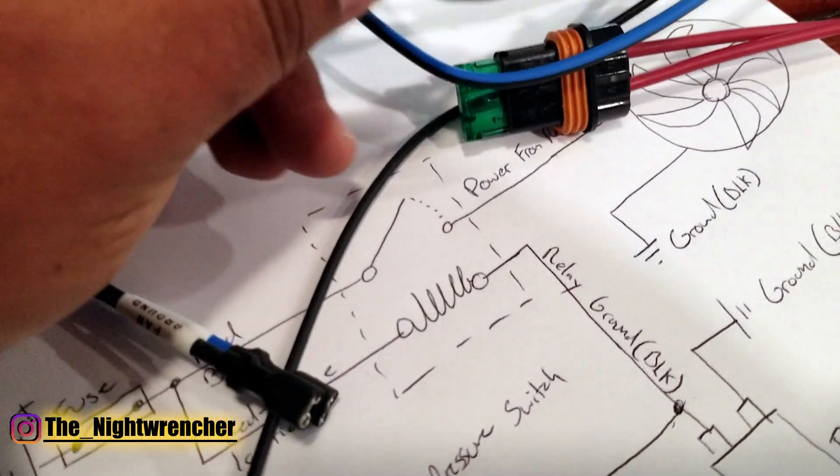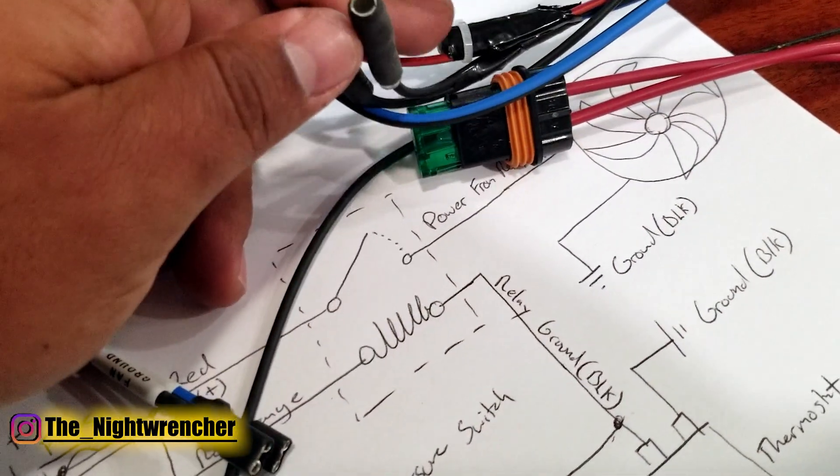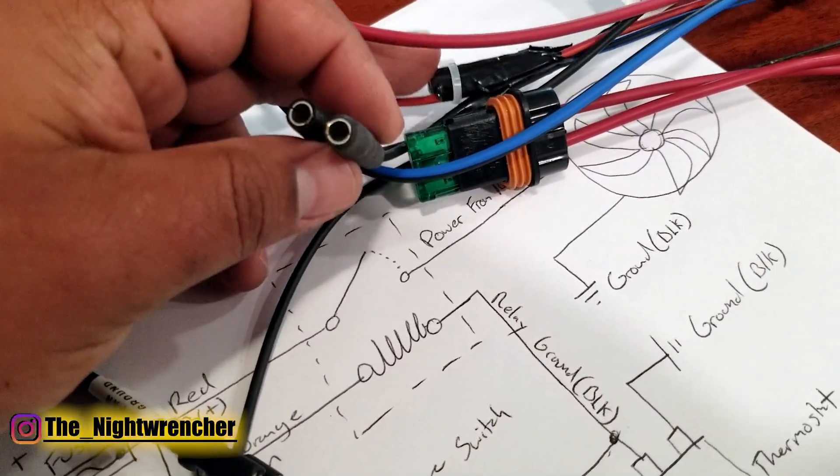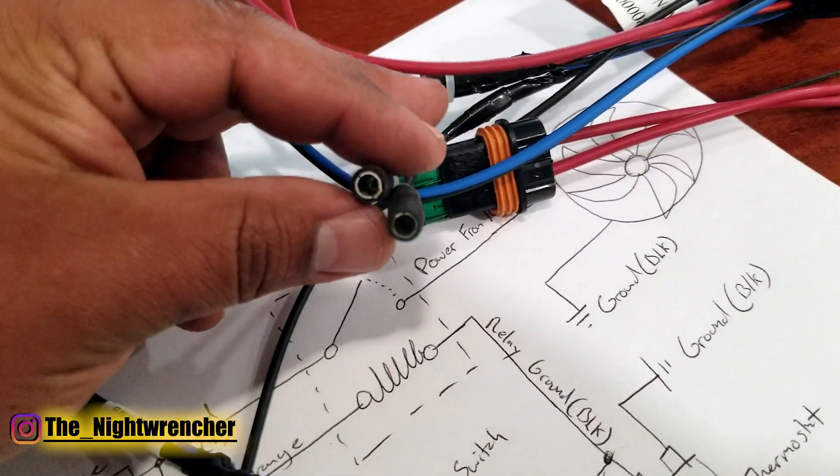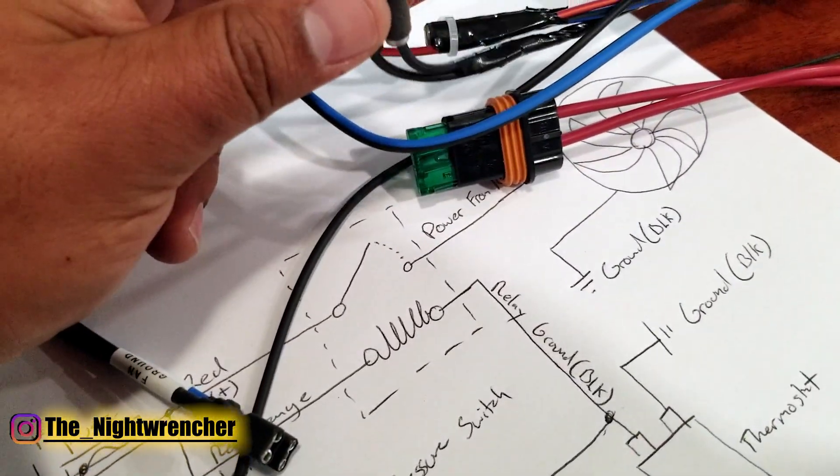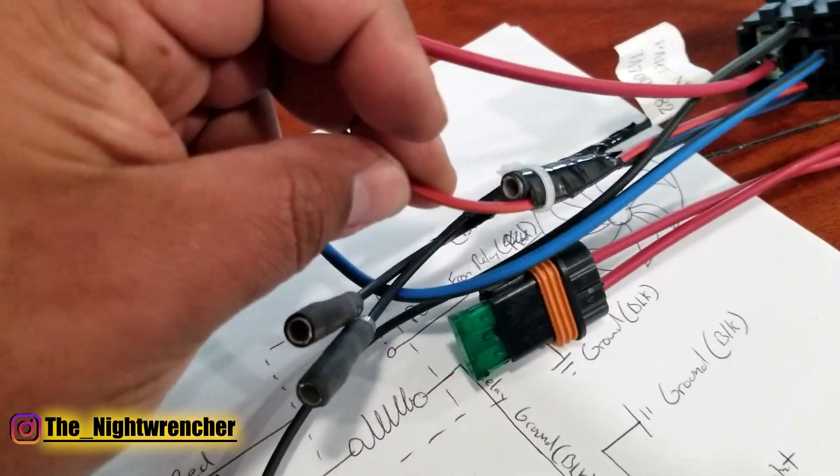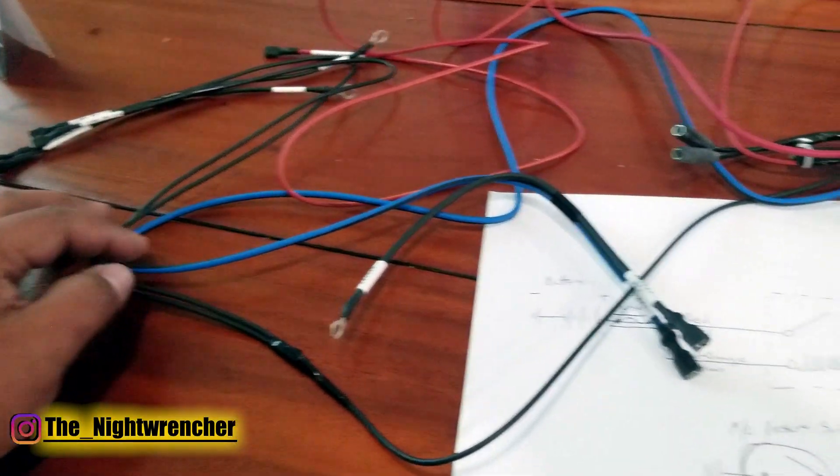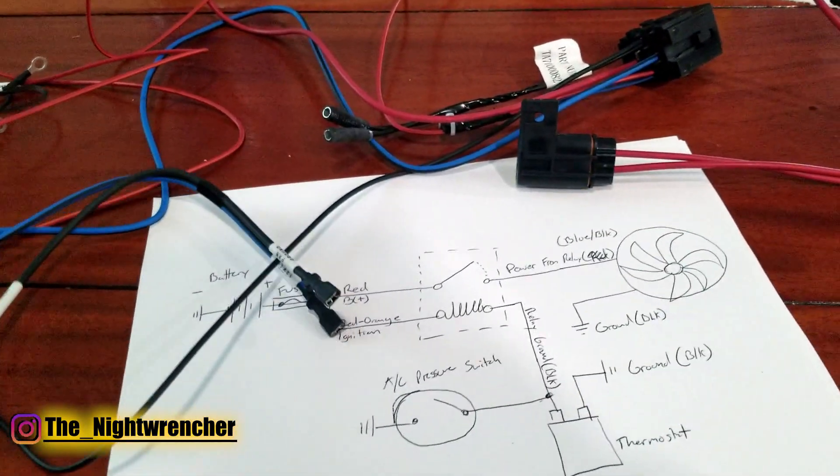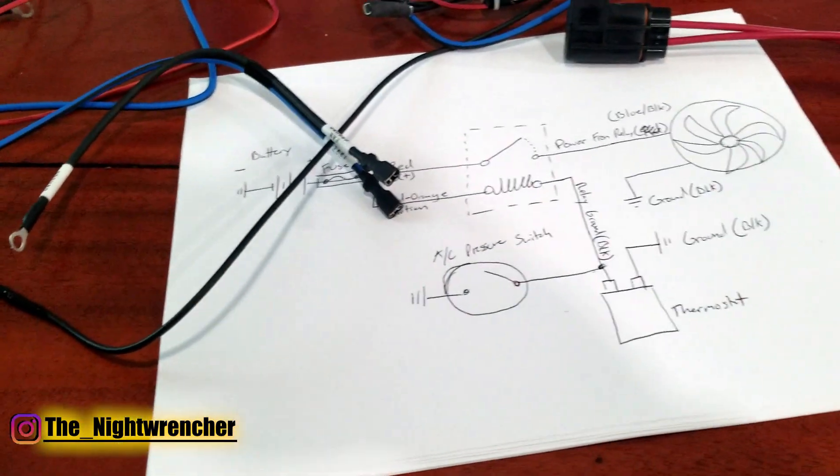This relay harness also has a couple of plugs on it and this is if you want to run tandem relays for multiple fans. You could just feed off of these wires, feed off of the powers and the grounds, and that's three less wires you actually have to worry about. That's enough complicated stuff, let's go ahead and actually get this system installed.